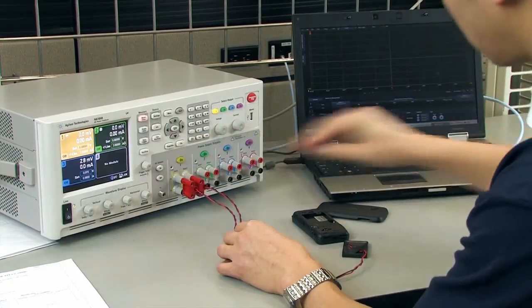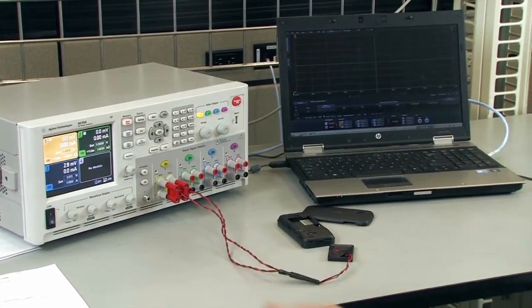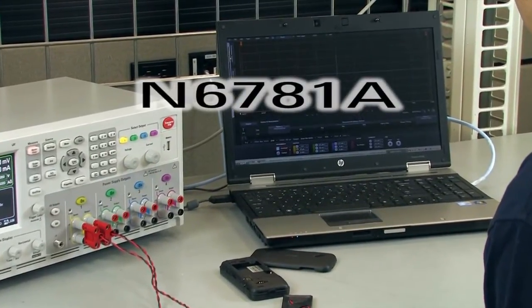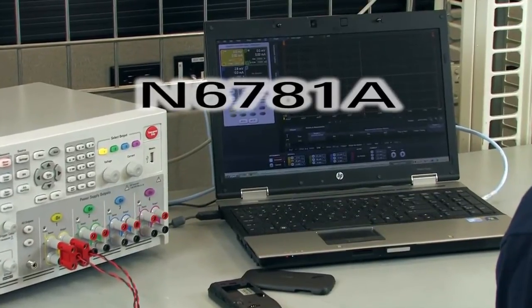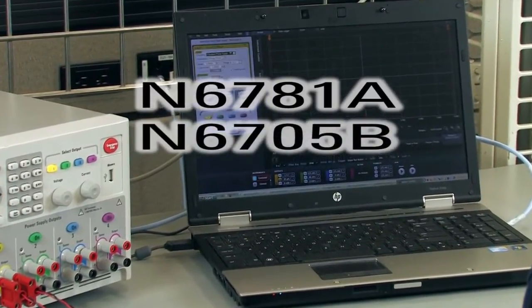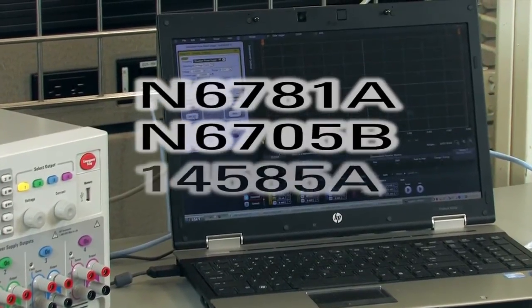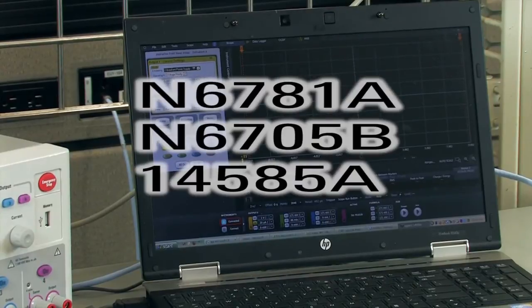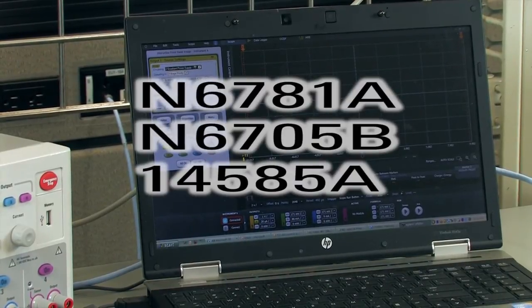Agilent Technologies has superior tools designed specifically for characterizing batteries. The N6781A Source Measure Unit is tuned for battery testing. When combined with an Agilent N6705B mainframe and 14585A software, it is a superior solution for measuring and analyzing battery capacity and energy.